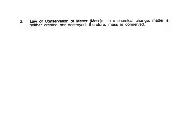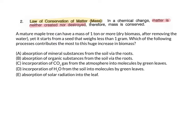Now let's look at the law of conservation of matter, or mass. In a chemical change, matter is neither created nor destroyed. Therefore, its mass is conserved. Before we move on with this, I'd like to ask you a quick question. A mature maple tree can have a mass of one ton or more. That's its dry biomass after removing all the water. Yet, it starts from a seed that weighs less than one gram. Which of the following processes contributes the most to this huge increase in biomass?